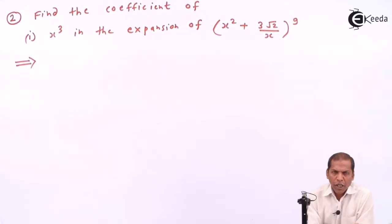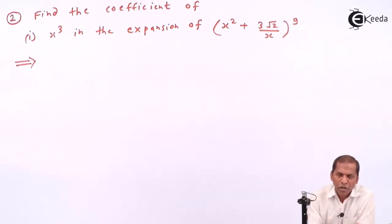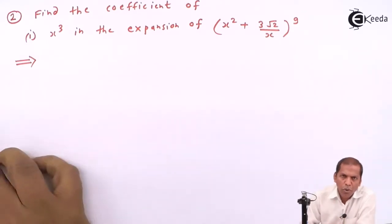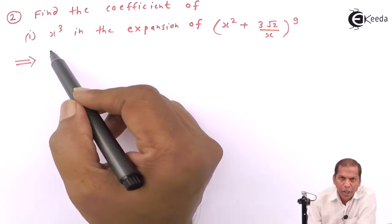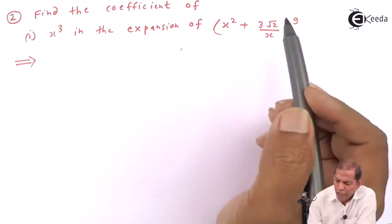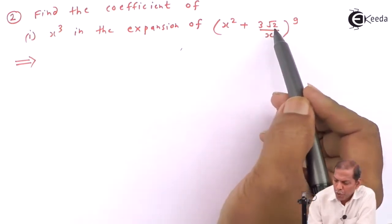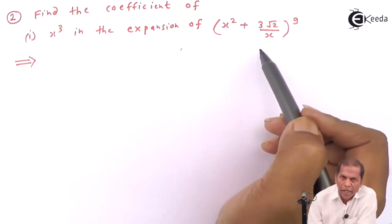Hello friends. Now we see problem number 2, sub-question 1, which is also based on general term and minimal term of the chapter Method of Induction and Binomial Theorem. The problem is: find the coefficient of x cube in the expansion of (x squared plus 3√2 upon x) whole bracket raised to 9.